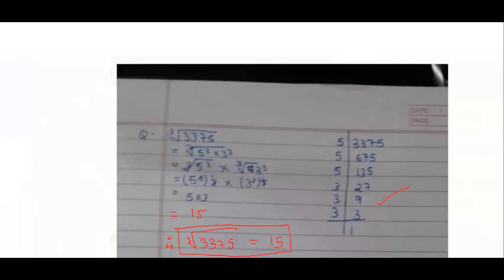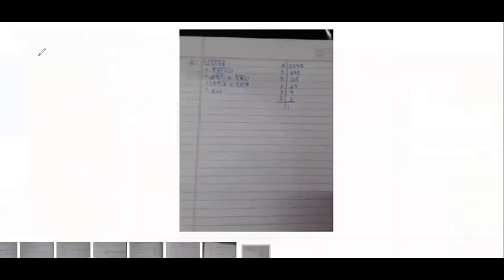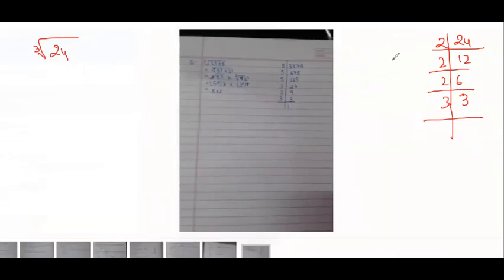Now second type of question comes where we need to find something like what should we multiply to get a perfect square, a perfect cube, or what should be divided? Remember this kind of question we did in square and square root also? So let me just focus on that. So suppose question is 24 only, cube root, not square root. I will do the prime factorization. 2, 12, 6, 3. So these three are in three pair, triplets. Not 3, 3, 2.